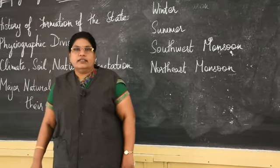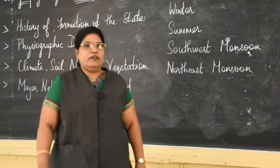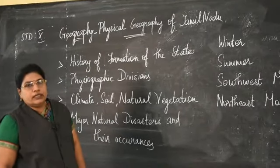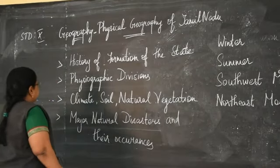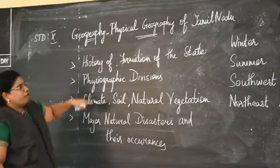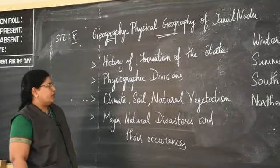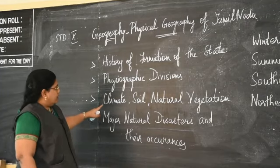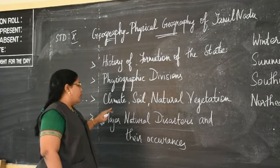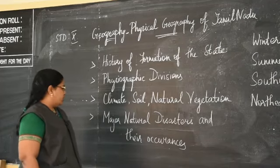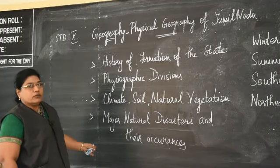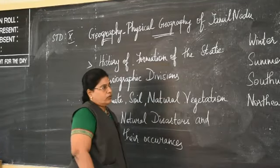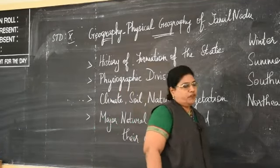Good morning students. This is the continuation of the lesson Physical Geography of Tamil Nadu. In the last class, we saw about the history of formation of the state of Tamil Nadu and the physiographic divisions. Now we are going to focus on the topics climate, soil, natural vegetation, major natural disasters that occur in Tamil Nadu, and what are the preventive measures.